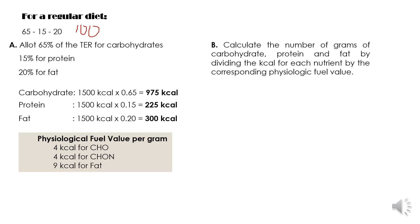4 kilocalories for carbohydrates, 4 kilocalories for protein and 9 kilocalories for fat. This fuel value per gram is constant so you just have to familiarize or memorize 4-4-9. All right, next.